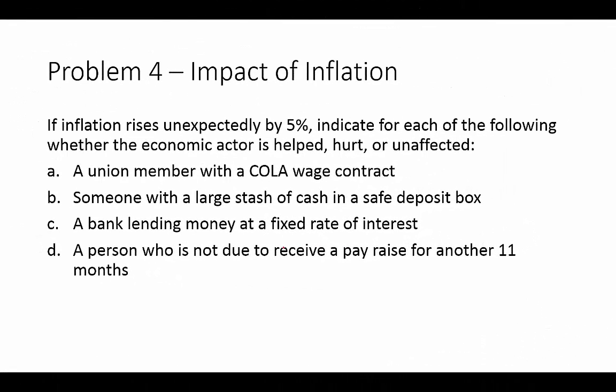Problem four: impact of inflation. If inflation rises unexpectedly by 5%, we need to indicate for each actor whether they are helped, hurt, or unaffected. Those most hurt by inflation are those holding cash — whether in the bank in a non-interest-bearing account or literally in hand. The first case is a union member with a COLA wage contract. COLA stands for cost of living allowance, and it's typically indexed to the inflation rate. In that case, that person is unaffected — inflation will have no effect on their wage or purchasing power.